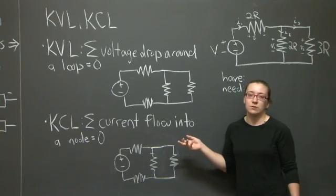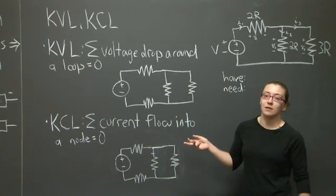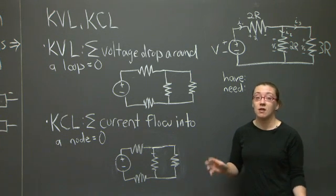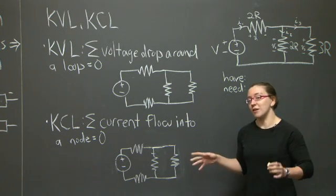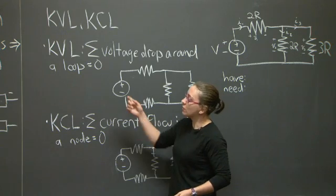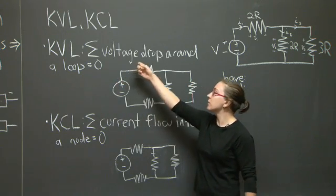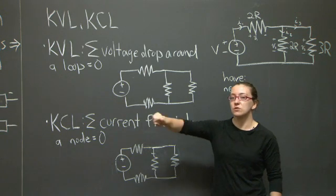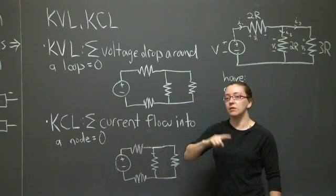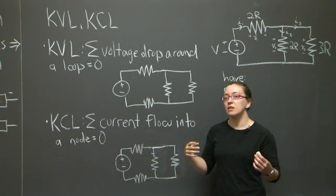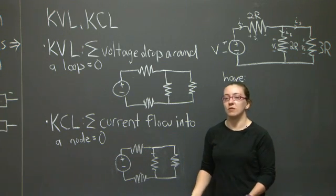Let's review Kirchhoff's voltage law and Kirchhoff's current law — you've probably covered this in 8.02, electricity and magnetism, or in an AP physics class, but we'll go over it quickly. Kirchhoff's voltage law states that the voltage drop around a loop is equal to zero: if you take the voltage drops across all elements in a particular loop in your circuit, their sum is zero.